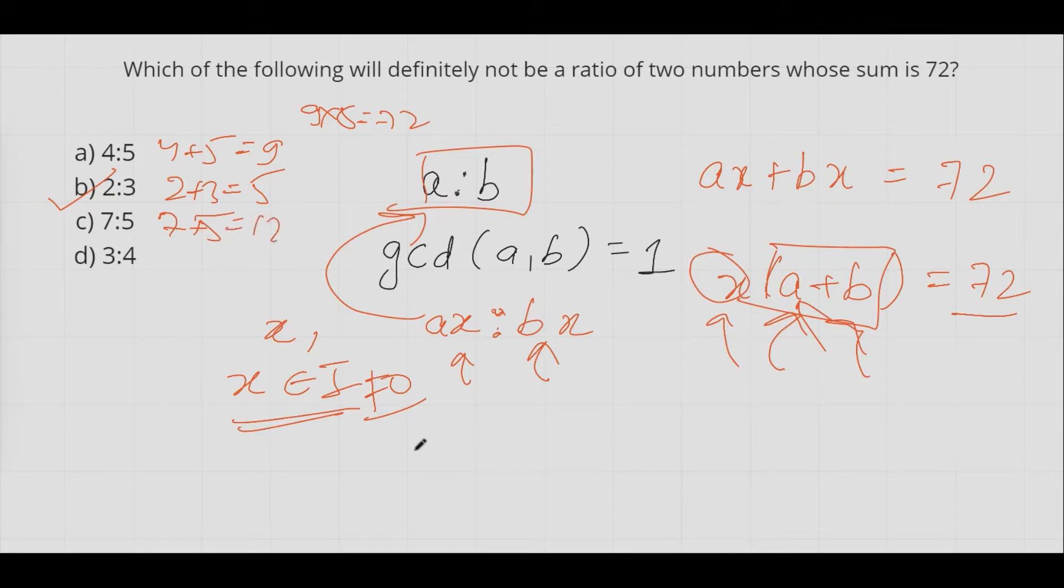3 is to 4, 3 plus 4 equals to 7. Does 7 divide 72? No, 7 does not divide 72. So this is also one of our answers.